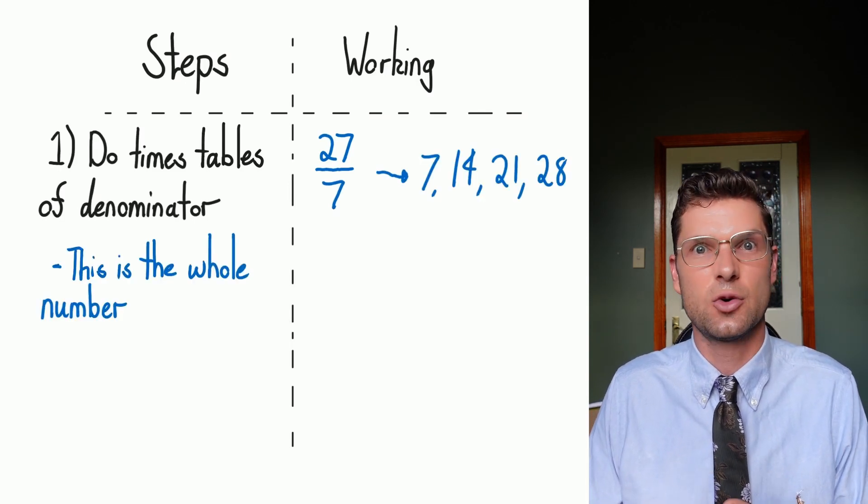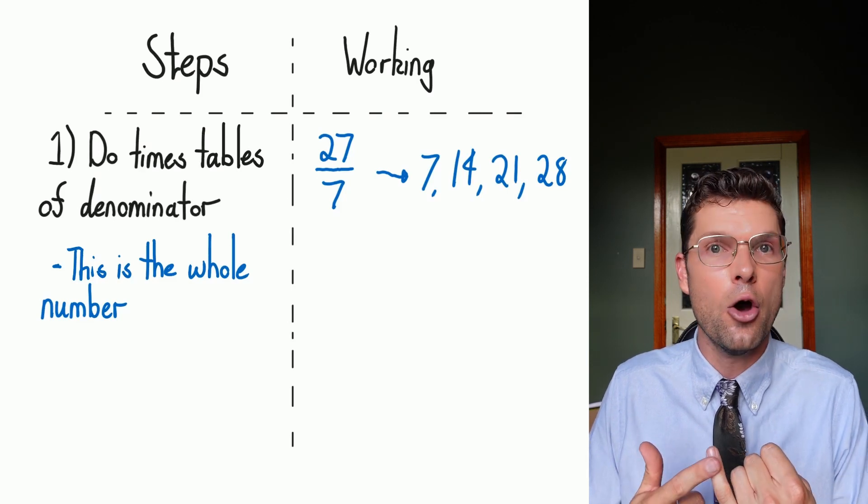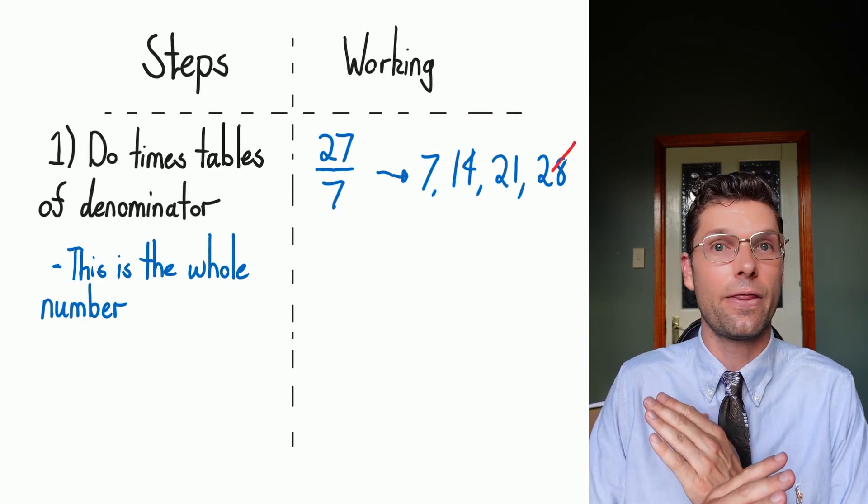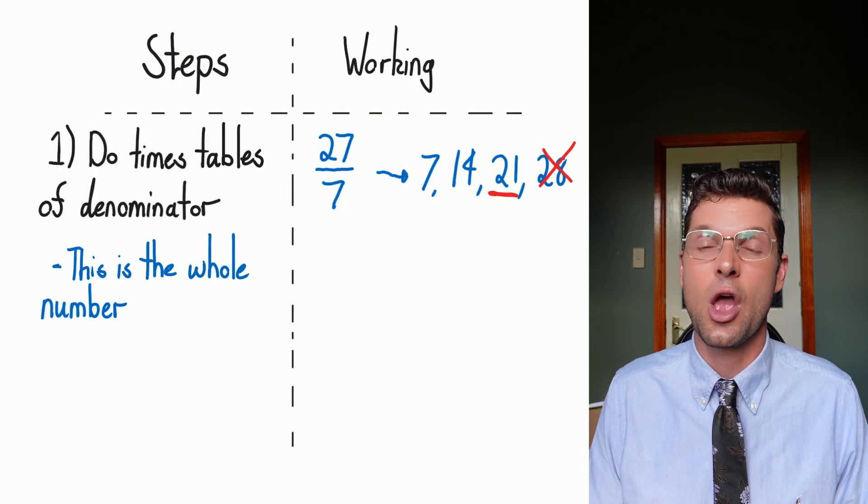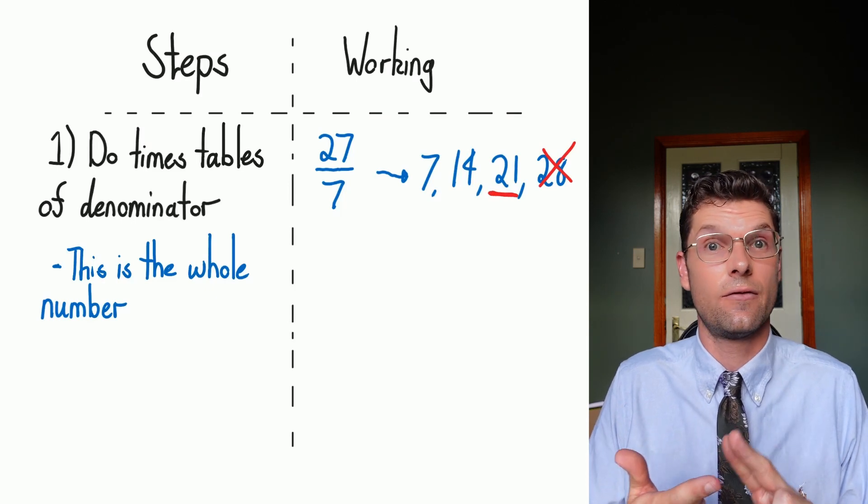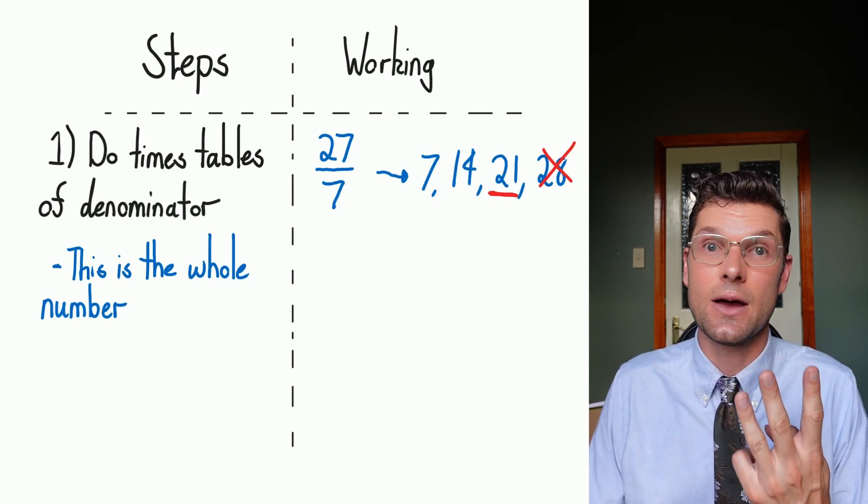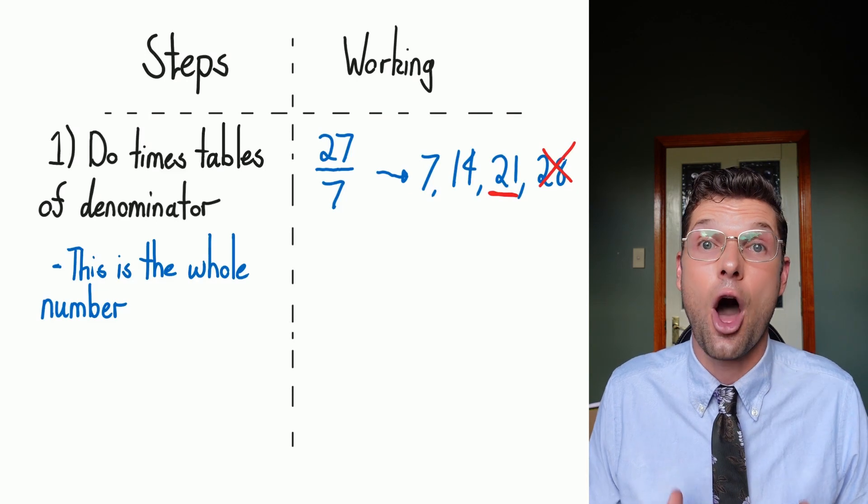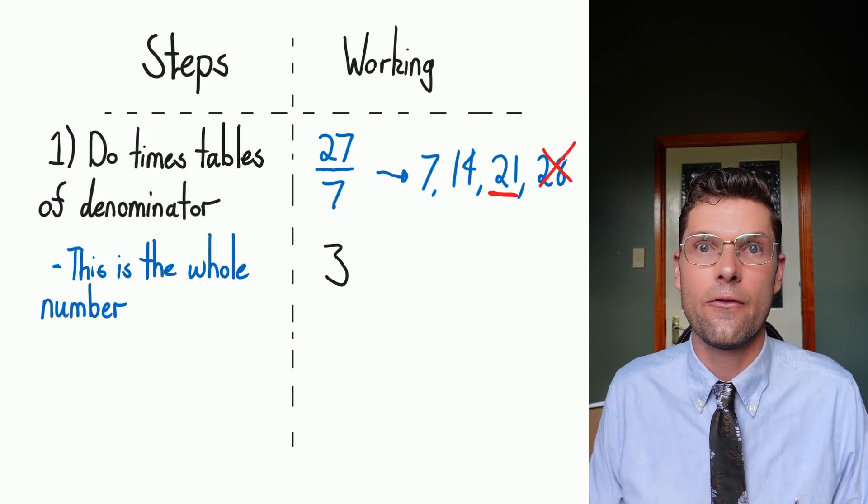So what we're gonna do is just the times table of the bottom number. So this is seven, 14, 21, 28. The minute that you go over, I want you to stop. So we're not thinking about that 28 at all. So all we've gotta do, seven, 14, 21, seven times three.